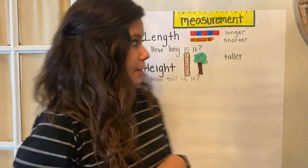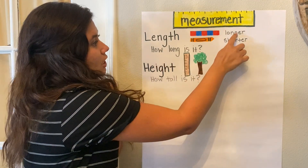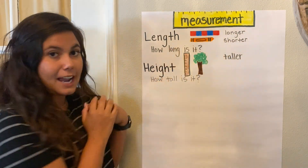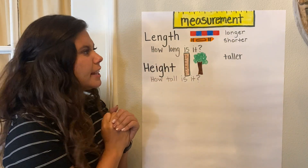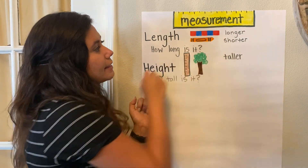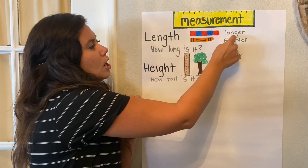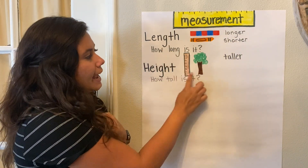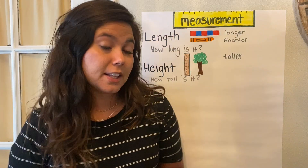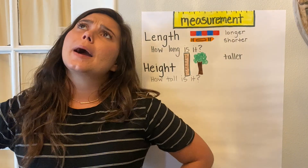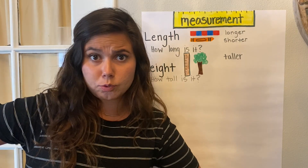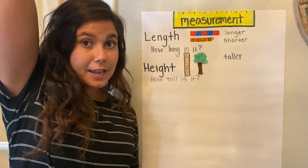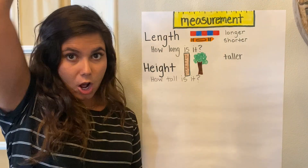Those are the words that we're going to be using: longer, shorter, taller, length, height. I put these pictures just to show you a little example. There are some cubes and a crayon - the cubes are longer and the crayon is shorter. Here I have a picture of a tree because when I think of a tree, I wonder how tall that tree is. So I put the measuring tape next to the tree because you might want to measure how tall it is.